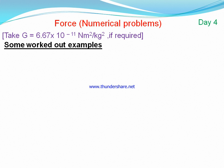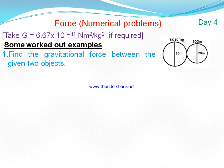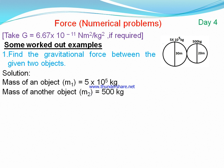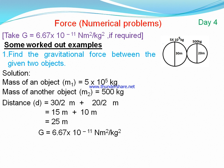Here is the first worked example: find the gravitational force between two given objects. The mass of one object is 2 × 10⁵ kg, the mass of another object is 500 kg, and the distance between them is measured from center to center. The diameter is shown here, so we require the distance from one center to another — that is, the sum of the radii. We divide the diameter by two, giving a distance of 25 meters. The value of gravitational constant G is also given.